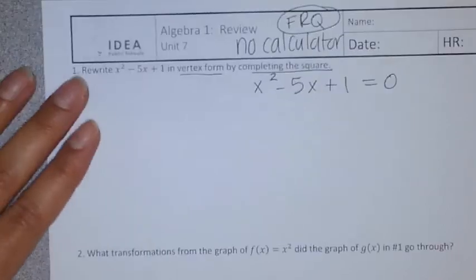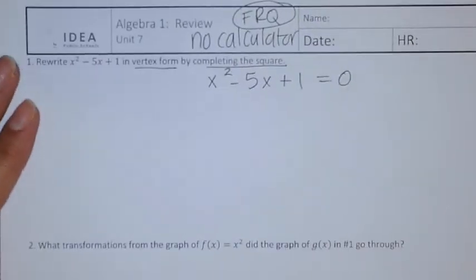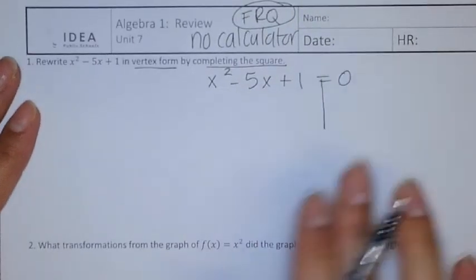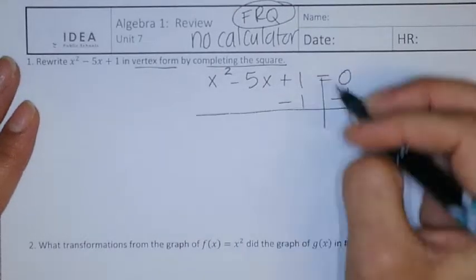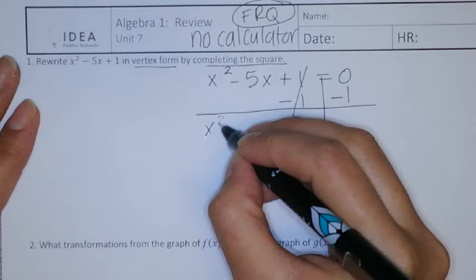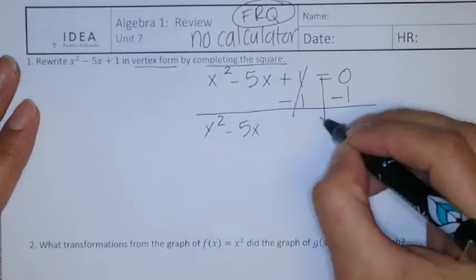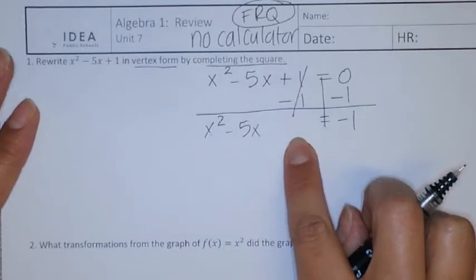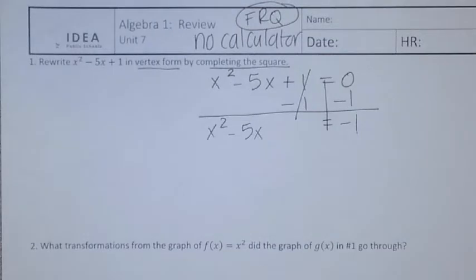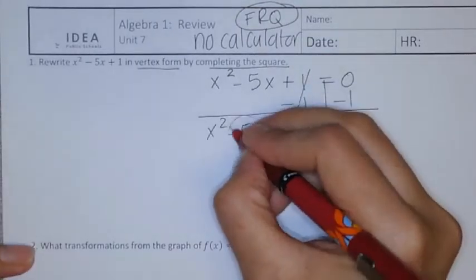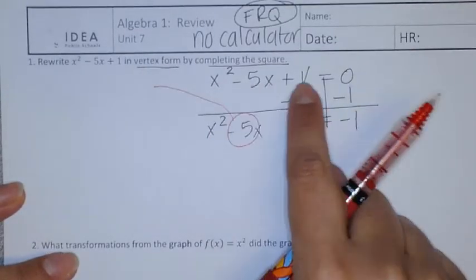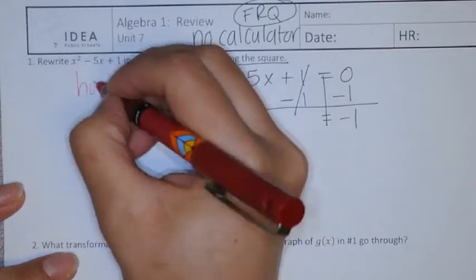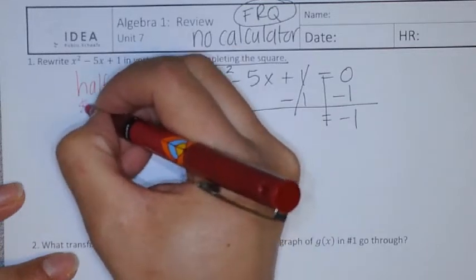So to do that, my first move is I'm going to get the non-perfect constant out of the way and leave a space for the perfect one. How do I get my perfect constant? The B, that's your ABC. Your B, you're going to half it and square it.